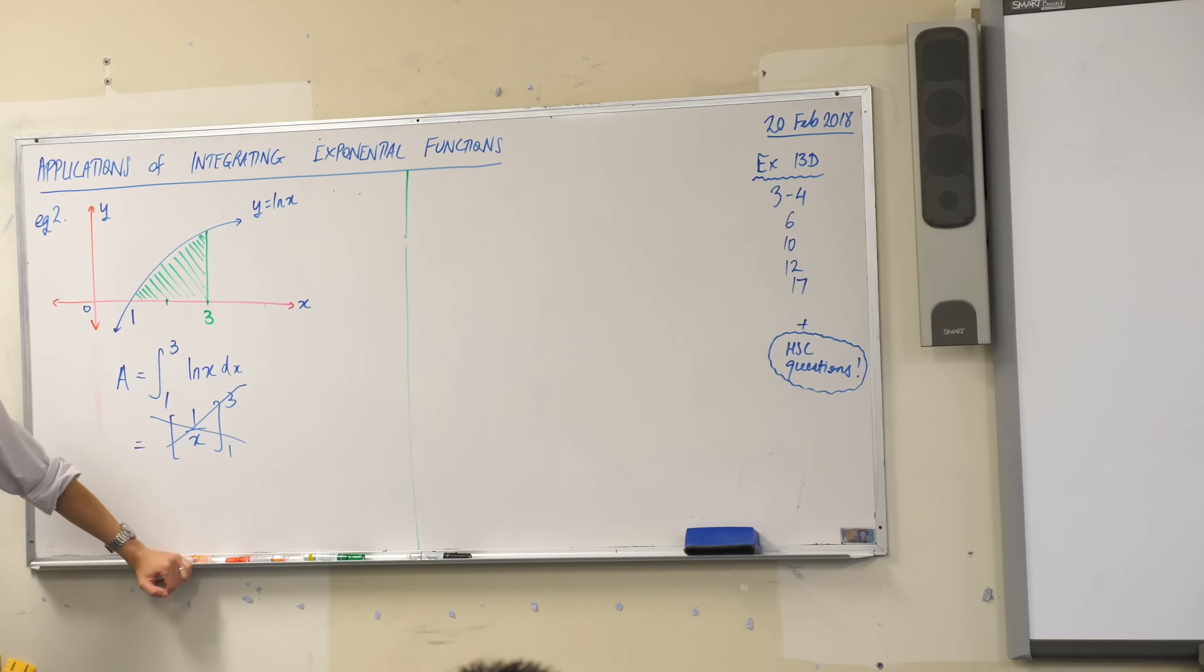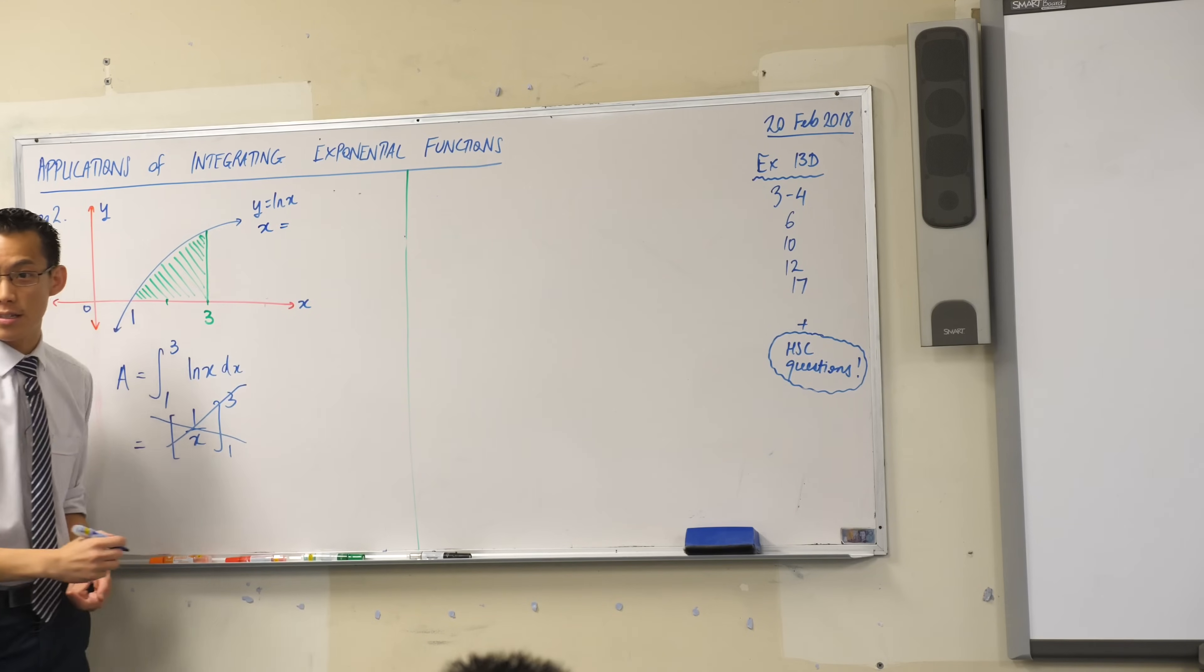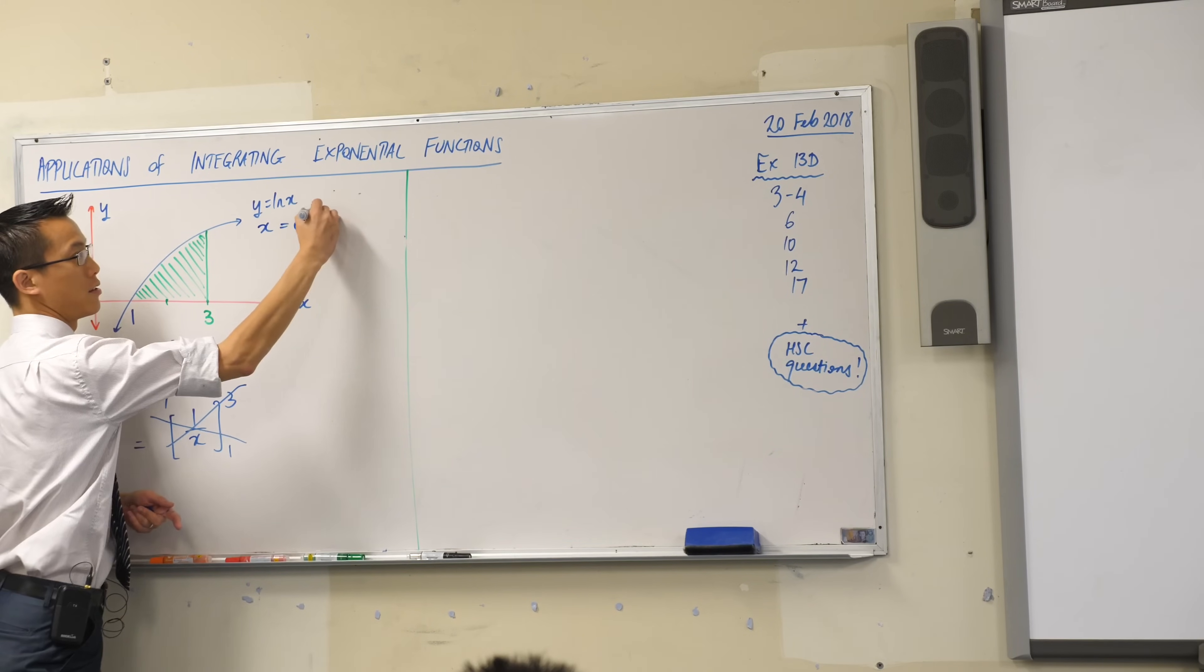A student notices: up here. This is a log and a log is just an exponential just viewed from the other angle, right? Two sides of the same coin. I could rewrite this and I encourage you to rewrite it as x, change that to be the subject, being equal to e to the y.